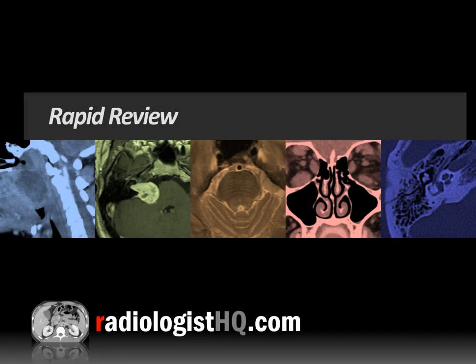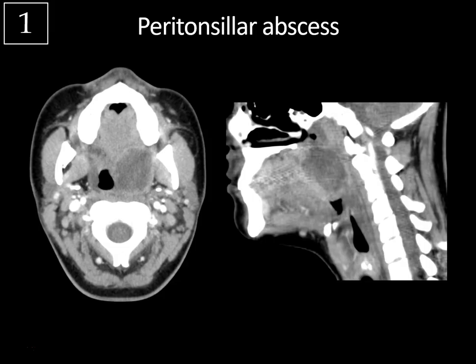Rapid review: Case 1, the peritonsillar abscess — we're in the pharyngeal mucosal space at the level of the oropharynx. It's a complication of tonsillitis with abscess formation in the peritonsillar space. Look for complications including extension into other spaces like a retropharyngeal abscess, thrombophlebitis of adjacent veins like the internal jugular vein, and airway compromise. Look for displacement of the fat-containing parapharyngeal space as a clue to nearby abnormality.